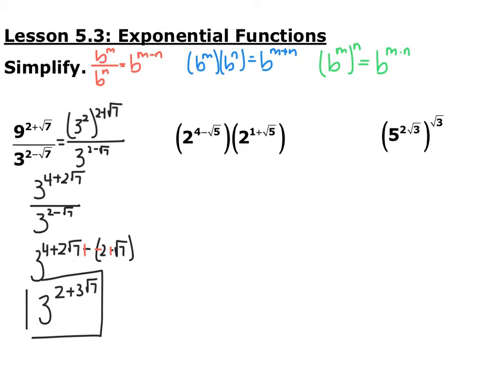Go ahead and pause the video and try these next two. These already have the same base and you're multiplying them together, so you can add the exponents. 4 plus 2 is 5. Negative root 5 plus positive root 5 goes away. So you end up with 2 to the 5th which is 32.